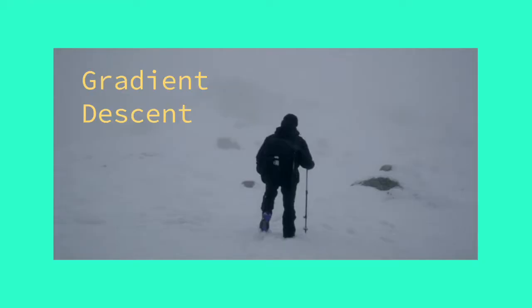A common way gradient descent is explained is as a person hiking down a mountain in the fog. Consider that it is so foggy that they can only see right in front of them. They don't know where the bottom of the mountain is because they can't see the bottom, but they know which direction their next step should be.